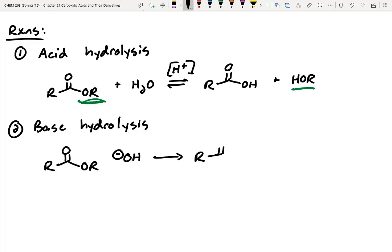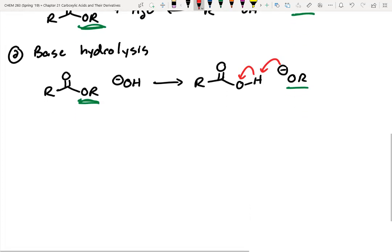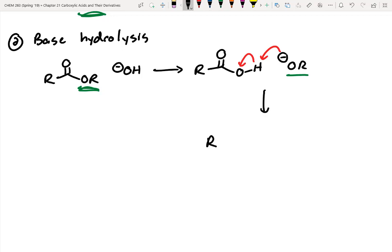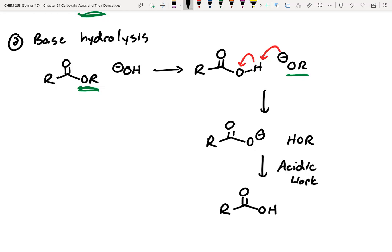In this reaction we'd create a tetrahedral intermediate, then the OR group would be kicked off, but it can't stop there — that's a pretty good base that was kicked off, so it'll immediately steal the proton. Acid-base chemistry is super fast, so with just hydroxide we'll never isolate our neutral carboxylic acid. To ensure we isolate the neutral acid at the end, we do an acid workup — step two is H3O+.